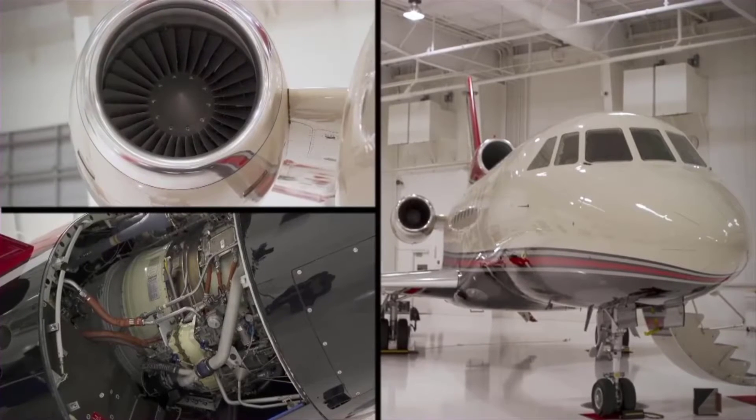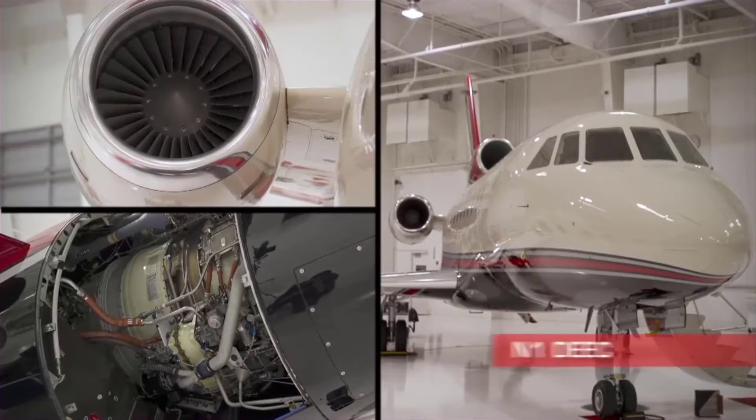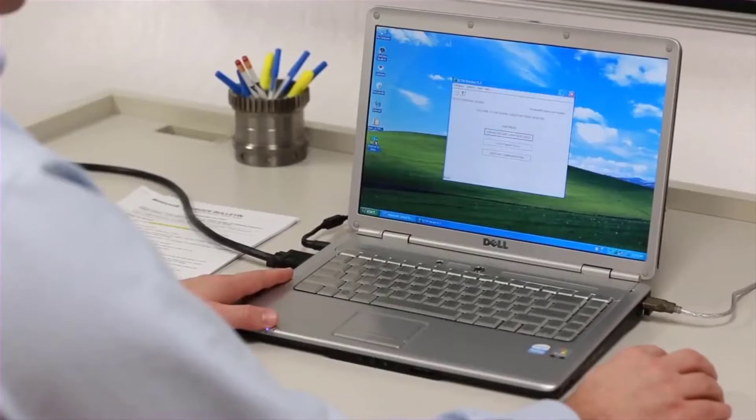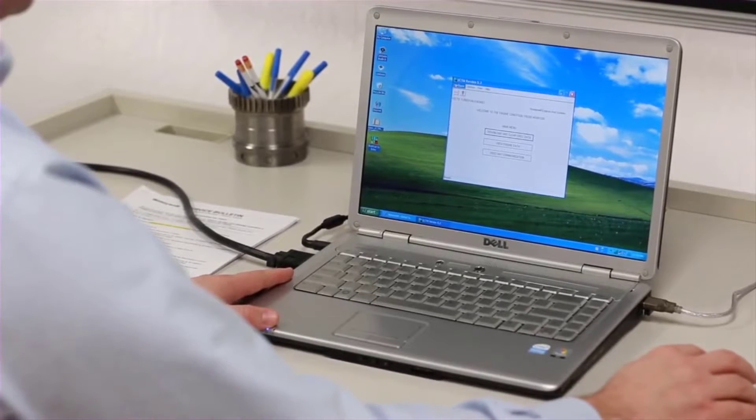The Honeywell Engine Condition Trend Monitoring System consists of an N1 DEC with embedded trend monitoring software, a personal computer with TFE731 ECTM software, and access to a central data processing center for advanced trending features.